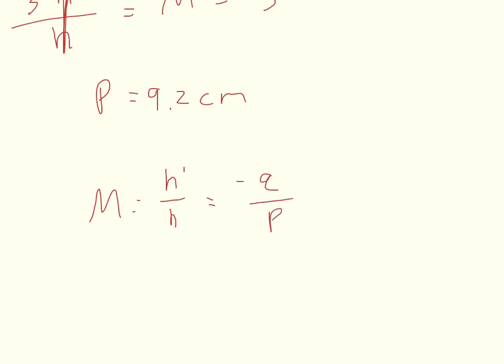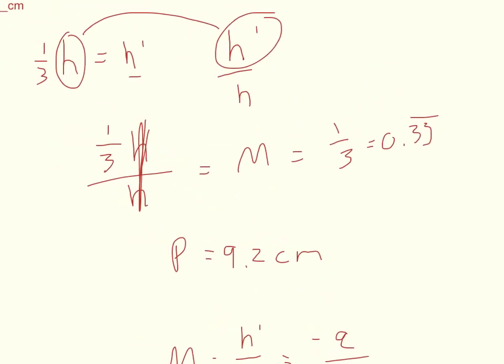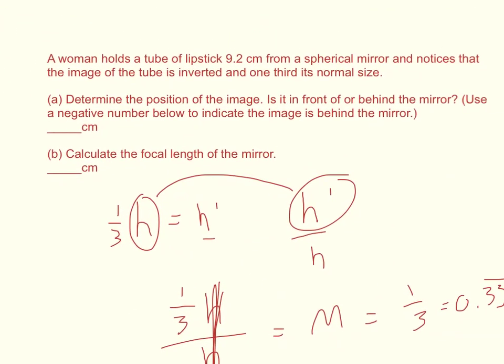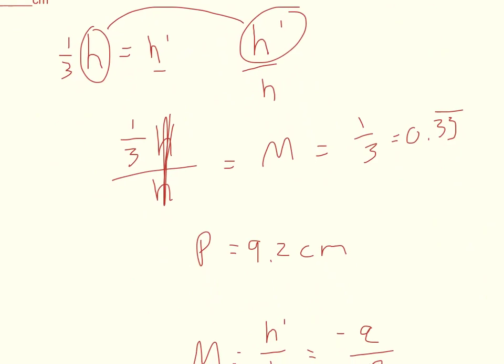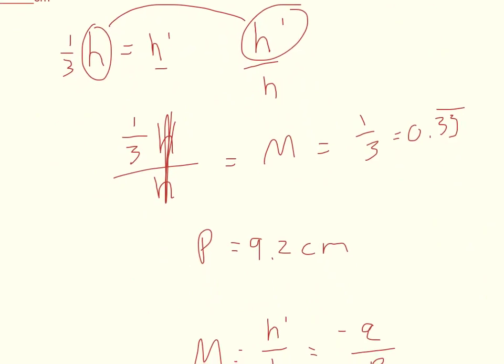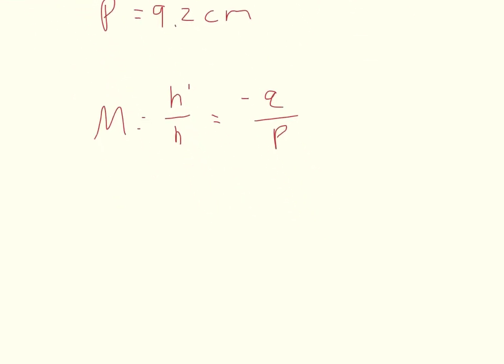Now one more thing about magnification. We said that it's one-third, but if you go back and look here, it says that the object is inverted. So when it's inverted, that means that the magnification is going to be negative. So when you plug in your magnification, you want to make it negative one-third. And so I can now come here and I know what my m is and I want to solve for q.